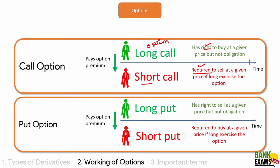What is a put option? The long has the right to sell at a given price but no obligation. Under the long call the long has the right to buy; under the long put the long has the right to sell. Both short call and short put are required: under the short call he is required to sell, and under the short put the short is required to buy at a given price. In both cases the long pays a premium to the short. It is up to the long whether to exercise on the expiration date — if he's making profit, he can do that.